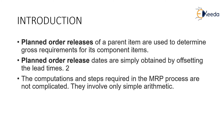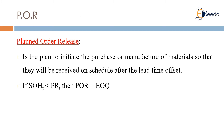The computation and steps required in the MRP process are not complicated — they only involve simple arithmetic. This planned order release is the plan to initiate the purchase or manufacture of materials so that they will be received on schedule after the lead time offset.